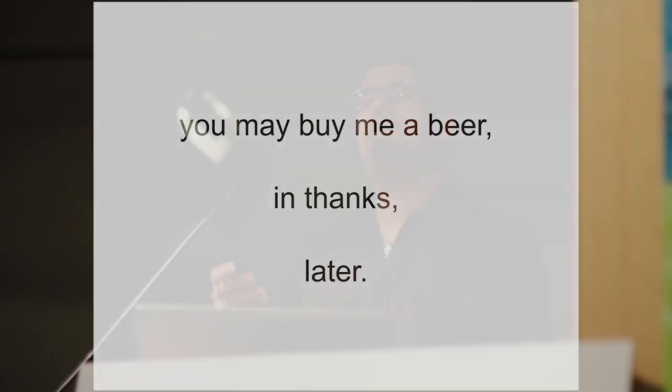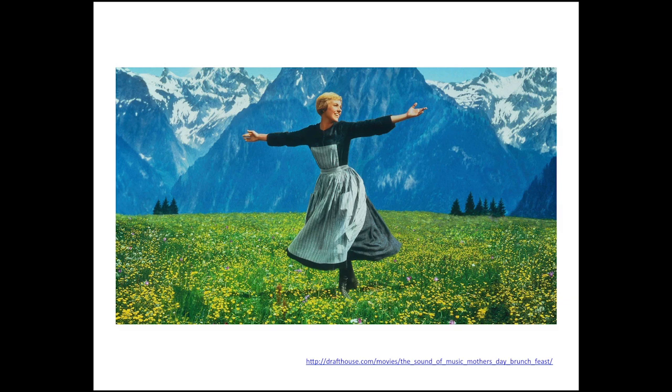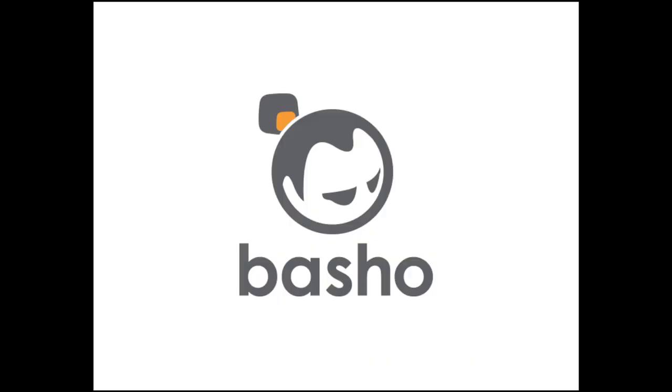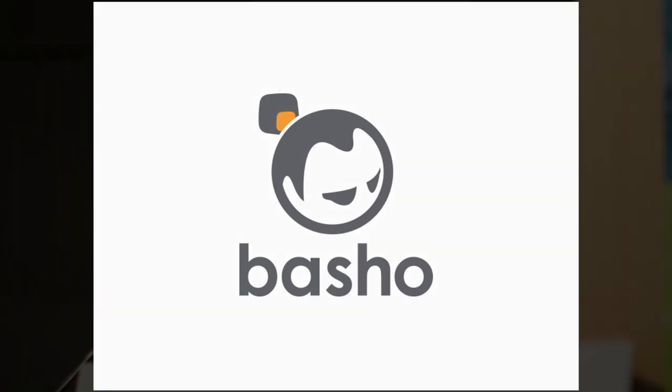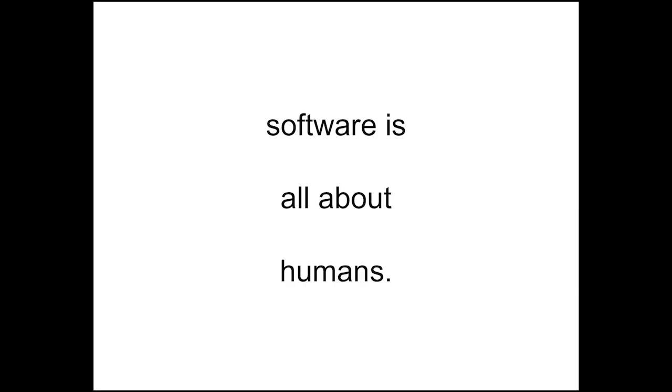So let's start at the very beginning, which is, in fact, a very good place to start. Basho is a distributed systems company — a distributed systems company with a distributed team. And as a member of this distributed team, I've learned many things, but one in particular: software is all about humans.